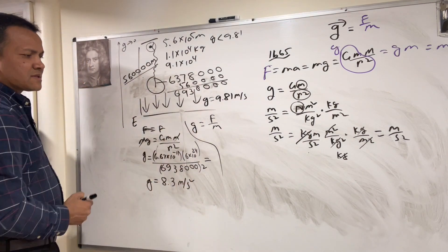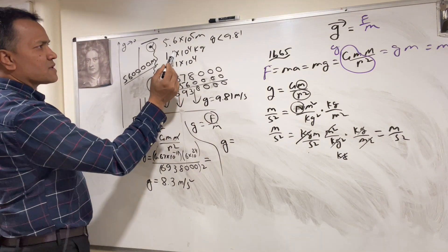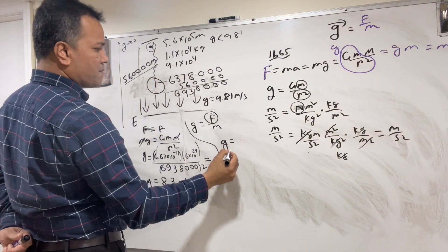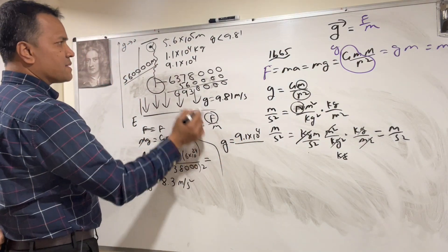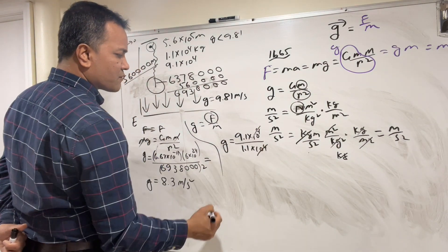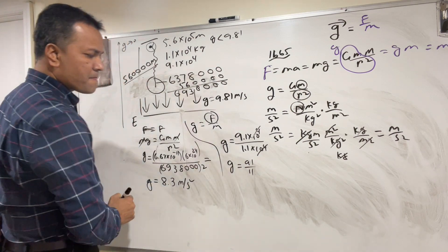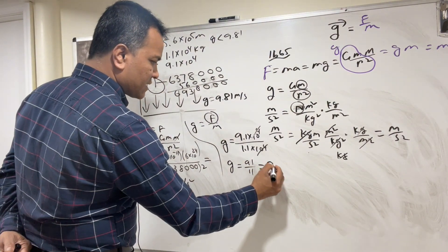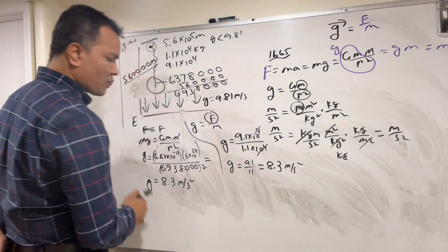Now let's verify using the other method. g = F/m: F is 9.1 × 10⁴ and m is 1.1 × 10⁴. The powers of 10 cancel, so we compute 91 divided by 11, which equals 8.3 m/s². Both methods give the same result: 8.3 m/s².